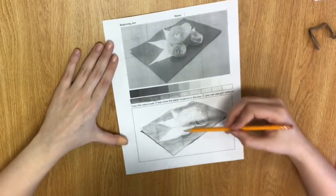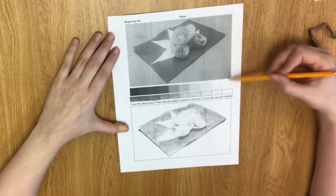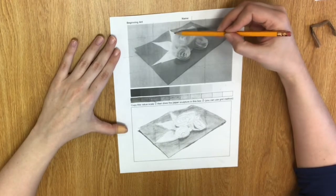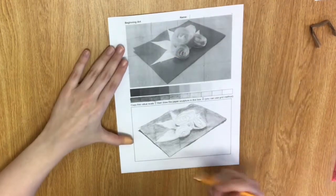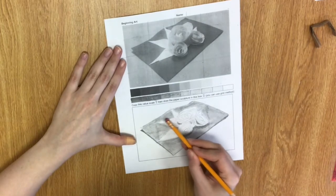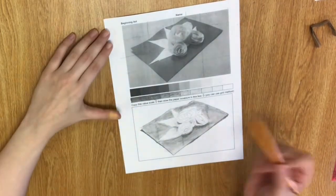So, now I'm going to go in and do more value. Because the brightest parts on here are this guy, that guy, these two. But other than that, nothing should really be paper white. Everything else should have some kind of value on it.